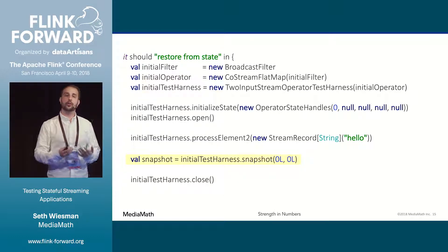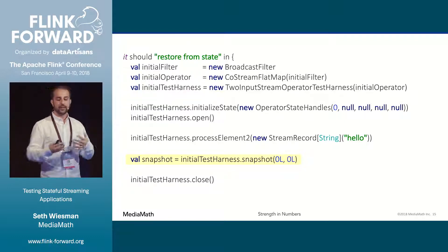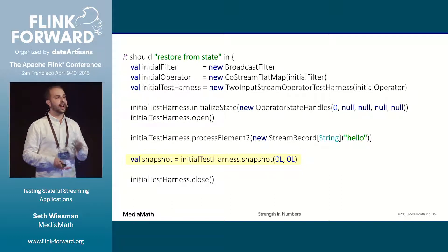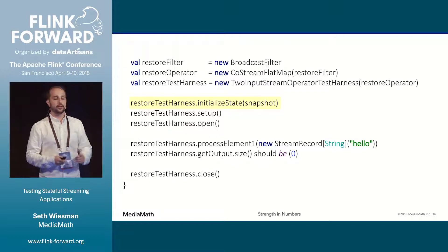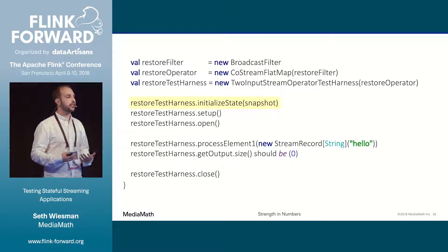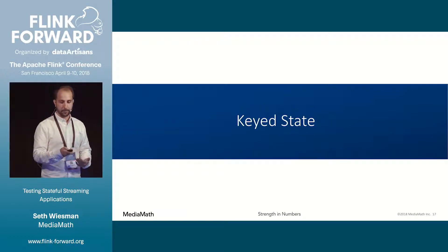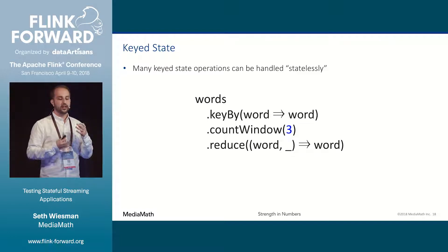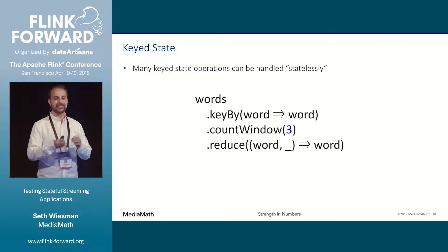We'll create a new instance of our broadcast filter, wrap it in the test harness, and manually run through the steps of Flink's lifecycle. We push the word 'hello' through as a filter word so it gets put into that set. Then we take a snapshot of the state of this operator without having to understand how that works under the hood — these bytes are a valid representation of our state. We create a new instance, restore from that snapshot, and confirm that pushing 'hello' to the other side is successfully filtered out. Our test says it is, so we feel good about our exactly-once semantics. Now, most interesting uses of state in application-level code will be focused around keyed state, where we're getting all like elements into the same place.